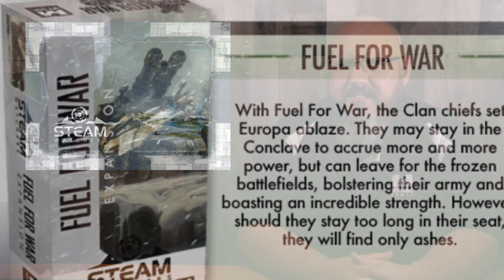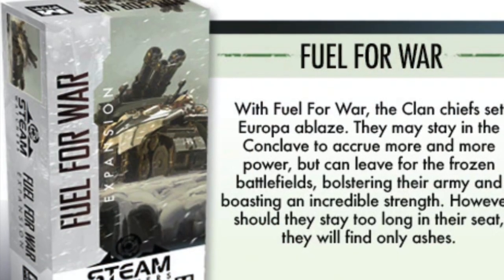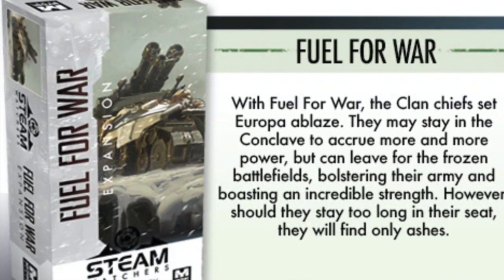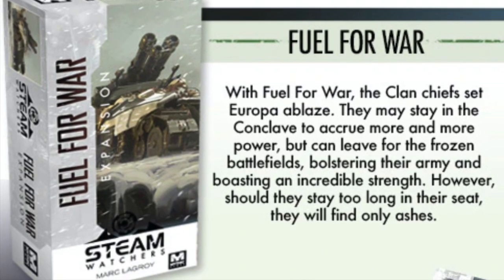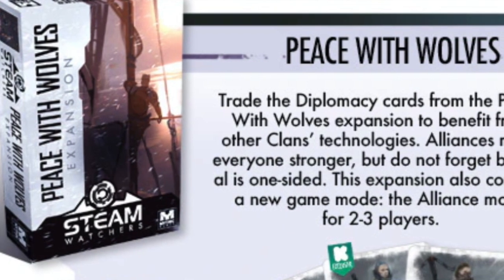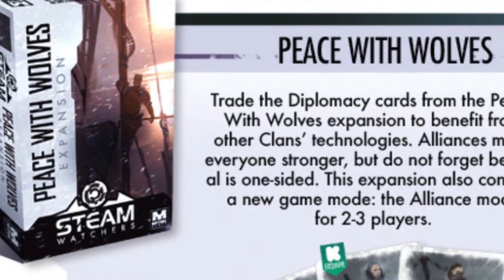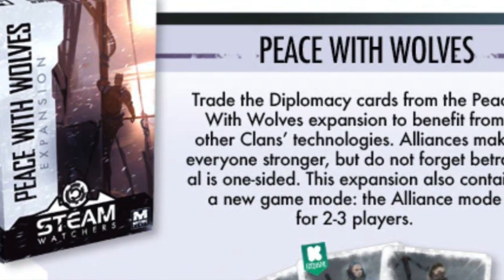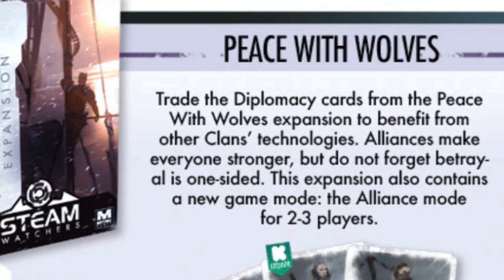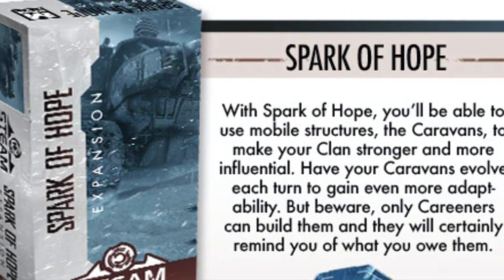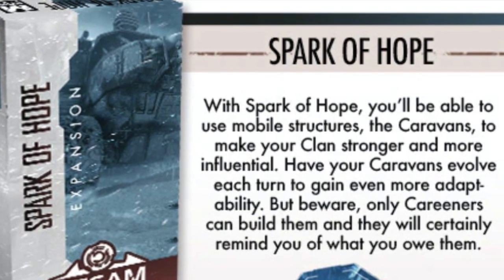Now we've noticed some questions concerning the amount of time added to the game by the different modules or expansions. The shortest is Fuel for War, which adds around 20 minutes of gameplay as it provides for more tactical opportunities. The Peace with Wolves Diplomacy module adds 30 minutes, while the Vassal Clan module expands the game for about 40 minutes. Spark of Hope adds another half an hour as well.